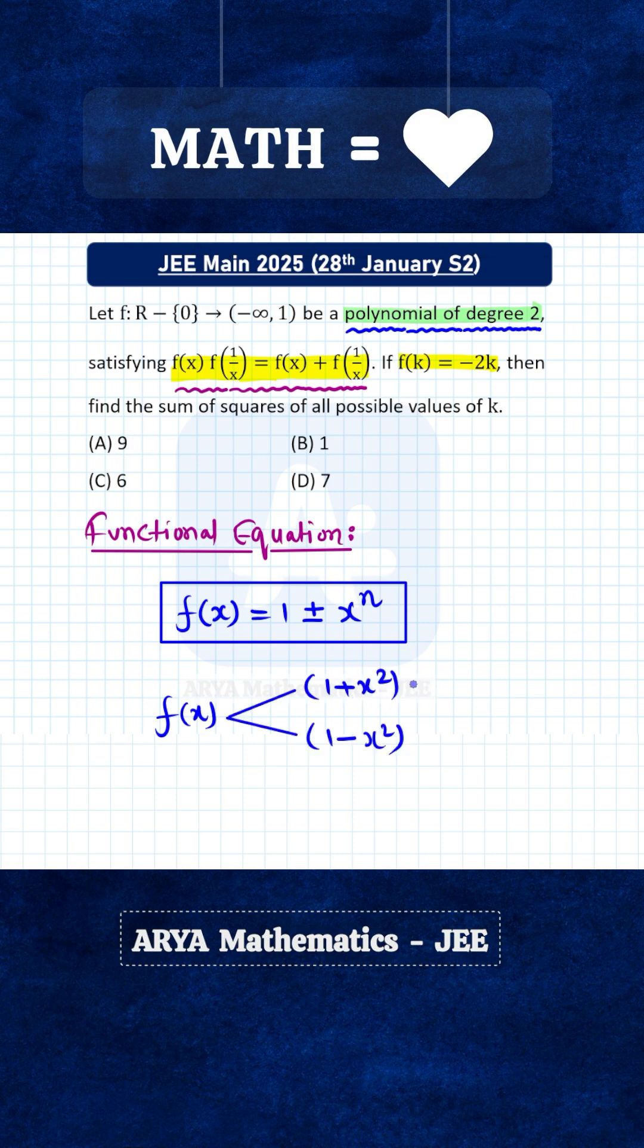For 1 + x², the range will be 1 to infinity. 1 is not included in the range because 0 is not included in domain. We will get f(x) = 1 when x is 0. For 1 - x², the range will be minus infinity to 1.